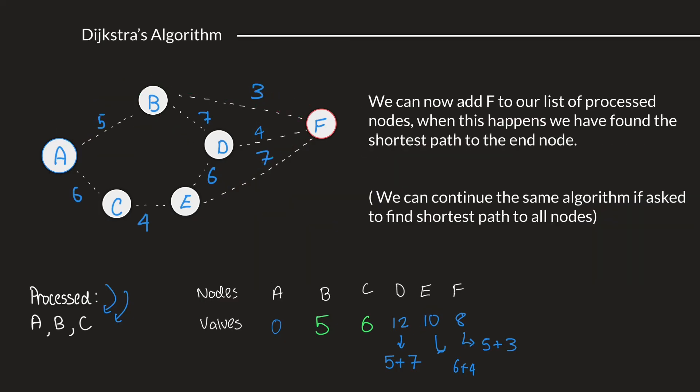We can now add F to a list of processed nodes. When this happens, and when we have added our final node to a list of processed nodes, this means that we have already completed the whole process, and we have found the shortest path from A to F, and this has a value of 8.